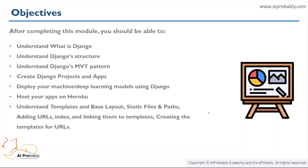Here are the objectives for this course. After completing it, you will be able to understand what Django is, its structure, Django's MVC and MVT patterns, how to create Django projects and apps, how to deploy machine learning or deep learning models using Django, how to host apps on Heroku, and all the basic Django elements like templates, base layouts, static files, paths, URLs, indexing, linkage, and everything else.